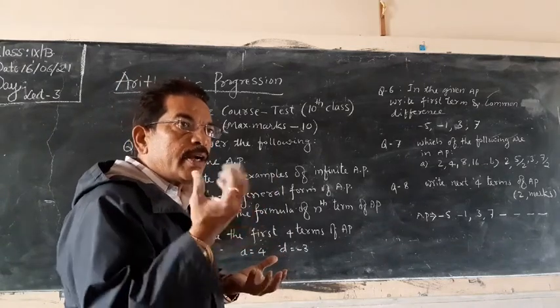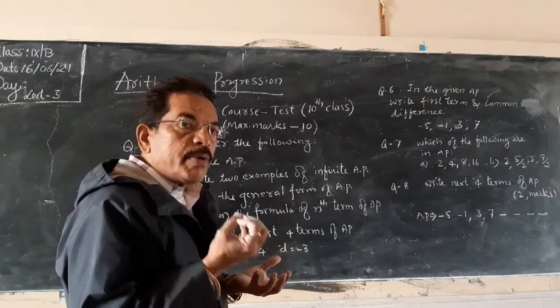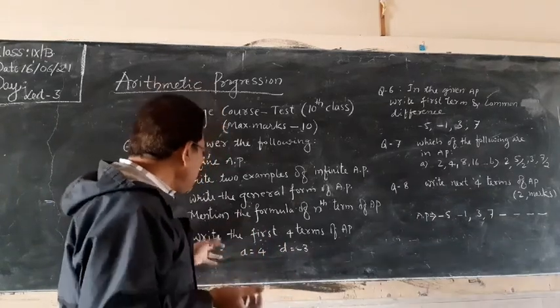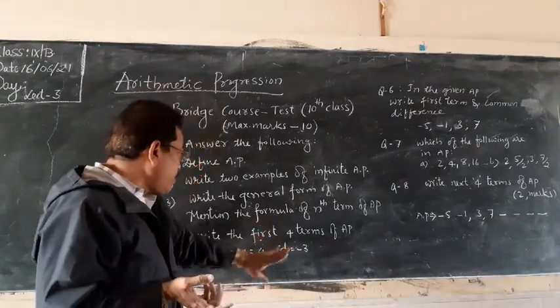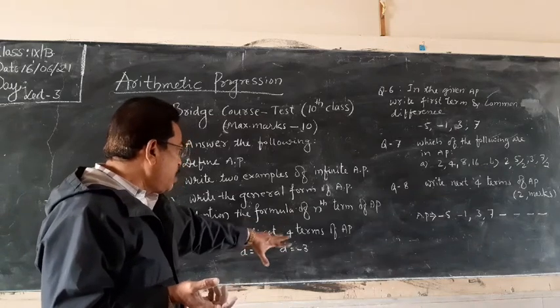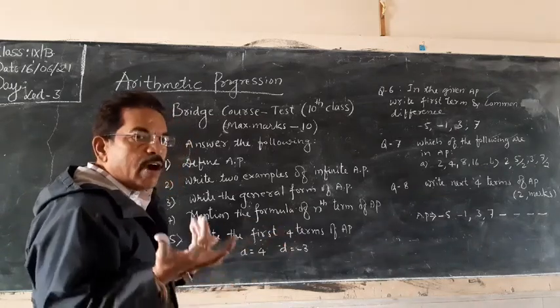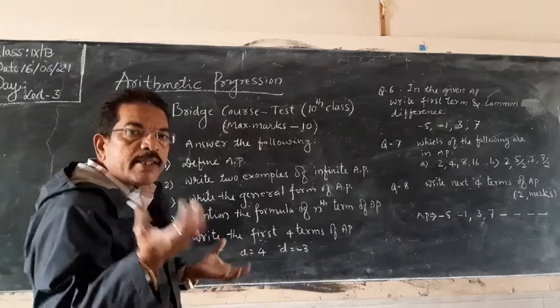Then write the first four terms of AP where A equals 4 and D equals minus 3. They have given the first term and the common difference; you have to write four terms.